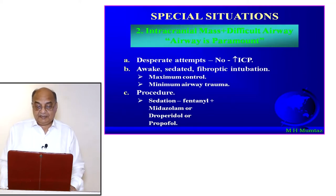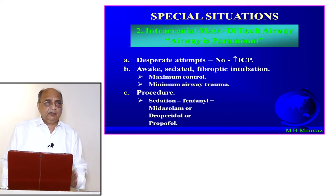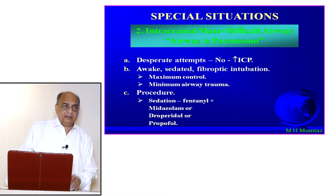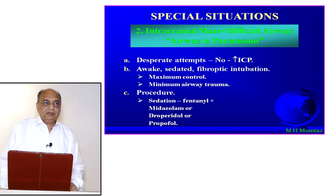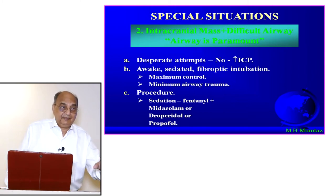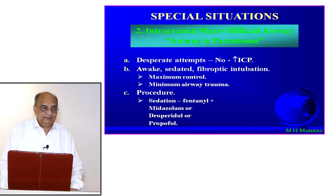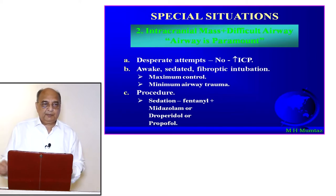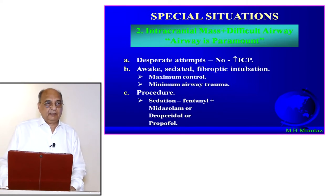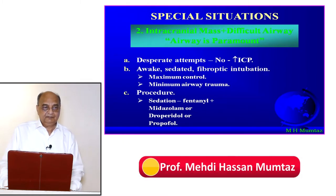Intracranial mass plus difficult airway: airway is paramount. If there is a difficult airway along with intracranial pathology, concentrate on the airway first — forget about the brain at that moment, because if you do something wrong with the airway you will kill the patient. Avoid desperate multiple intubation attempts as multiple attempts increase intracranial pressure and damage the brain.